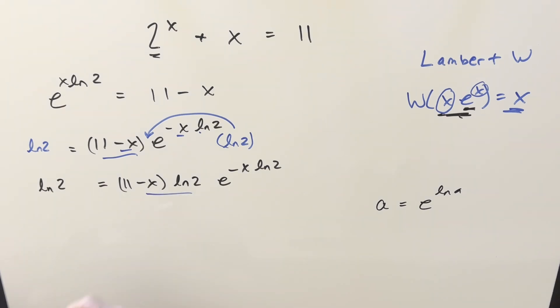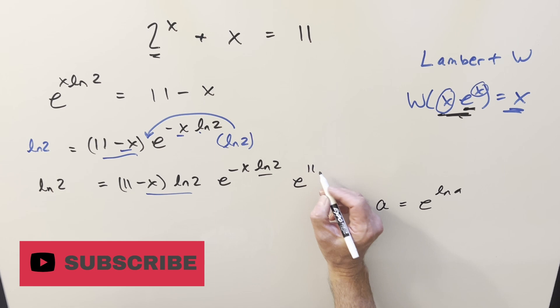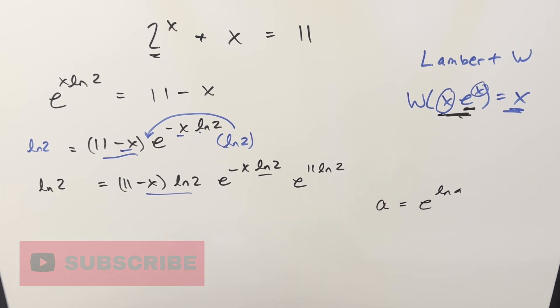What I can do for this is if I multiply in e to the 11, that's going to give me the 11, because we're going to have exponent properties here, but we also need it to work with this ln 2. So let's have this as e to the 11 times ln 2. But then I need to do the same thing on the left side of the equation.